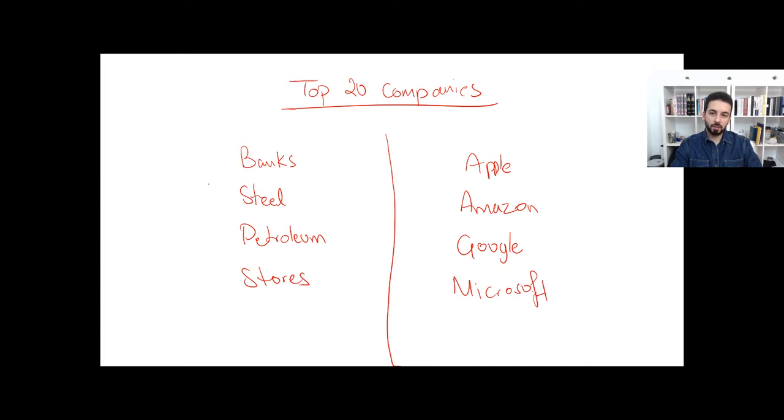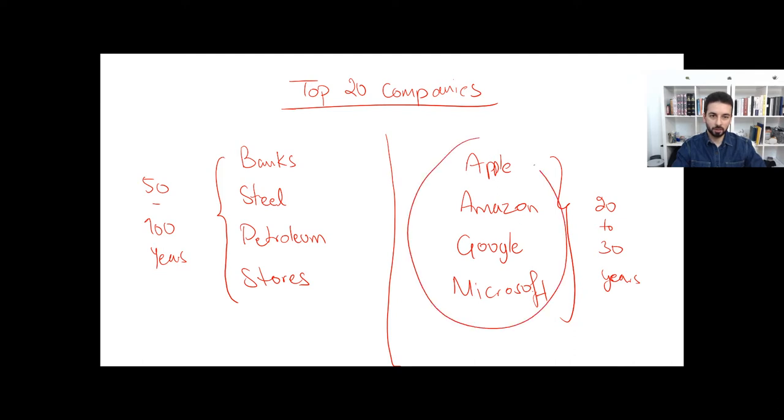The difference between these two companies is that these companies are at the top after having struggled and strived for 50 to 100 years typically, whereas these companies, these outliers, have come onto the scene in the last 20 to 30 years max. What has propelled these companies to the very top very quickly is that all these companies are online businesses, whereas these are all what they call brick and mortar or offline businesses.